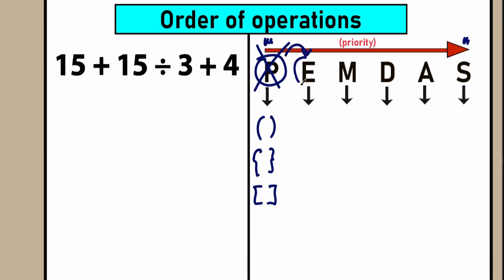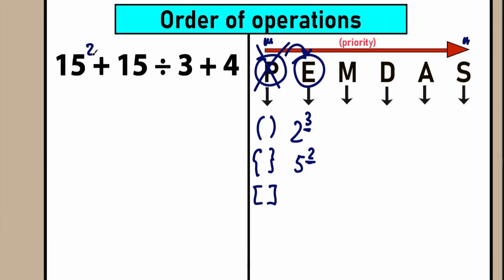After P, we have letter E, which stands for exponents. This is the same thing as a power — for example, 2 to the power 3, or 5 to the power 2. Let's scan our question for powers. We don't have any. For example, if we had 15 squared here, we would need to evaluate that — 15 squared equals 225. But in our case, we don't have parentheses, we don't have exponents, so we can skip this part too.